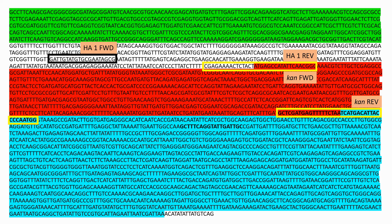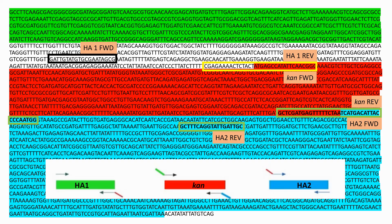The kanamycin reverse primer is now highlighted. This has an overhanging sequence homologous to homology arm 2. The homology arm 2 forward primer has an overhang matching the kanamycin reverse sequence. Finally, the homology arm 2 reverse primer site can be seen highlighted. The image represents what the primers should amplify along with their overhanging sequences. Here you can see the kanamycin reverse primer sequence, along with the overhang identical to the homology arm 2 sequence.